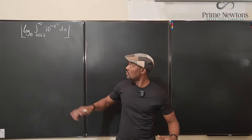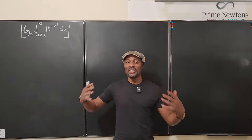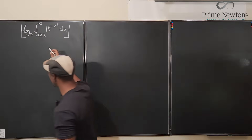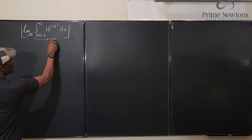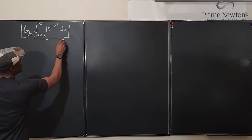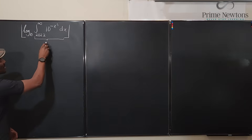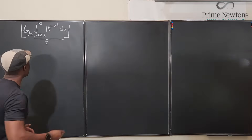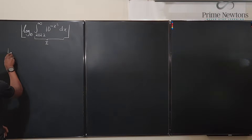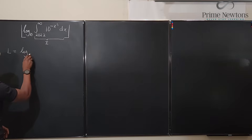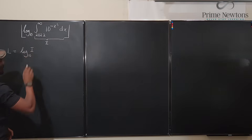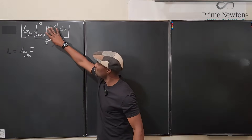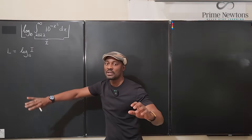I'm going to represent the integral function here as I, so that the value we're looking for, let's call it L, will be equal to log base 10 of I. With this, we're going to try to rewrite the integral so it conforms with the standard form of the incomplete gamma.